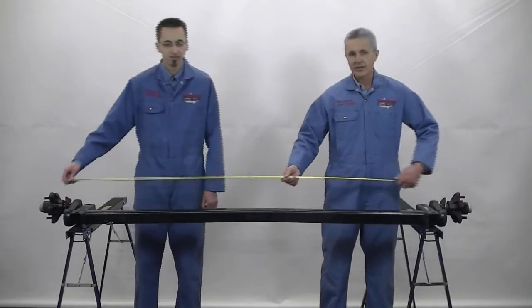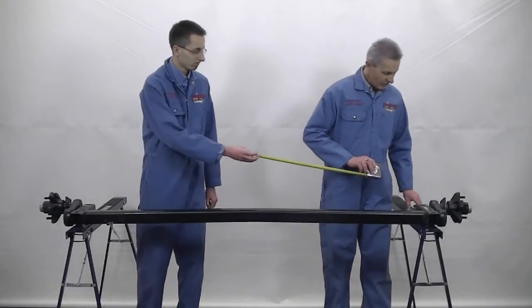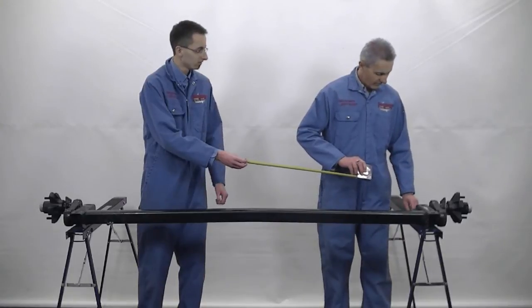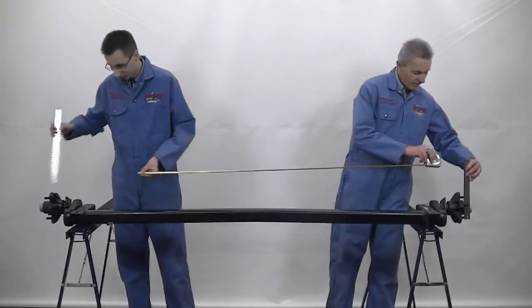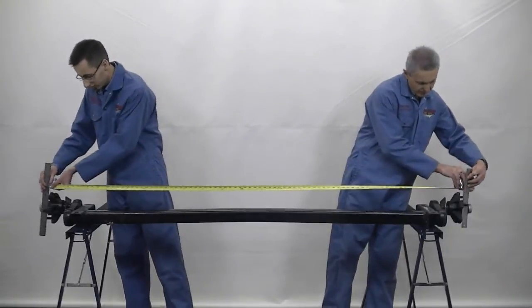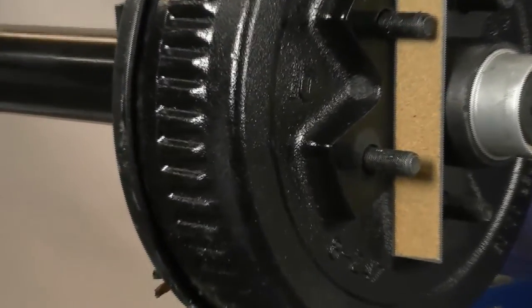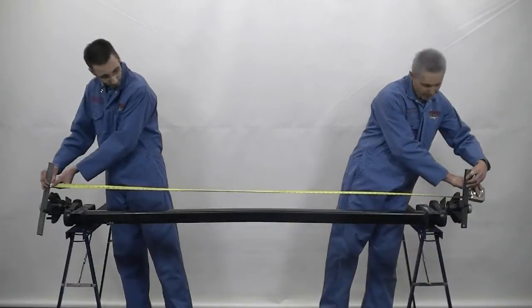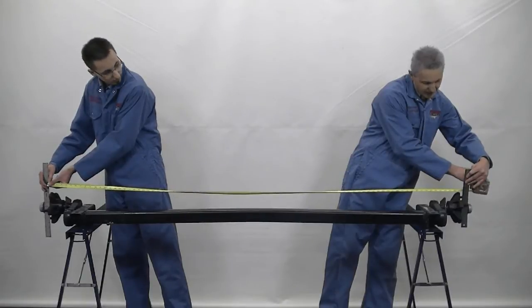The next thing we need to know is the hub face to hub face measurement. Using a couple of straight edges, placing along the hub face of the hub. From hub face to hub face we have a measurement of 86 inches.